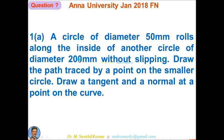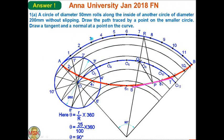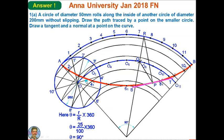Draw arc AB with radius equal to 100 mm. Before finding the angle, the arc length of AB must be equal to the circumference of the smaller circle. The diameter of the smaller circle is 50, so the circumference is π×50. The arc length AB must equal π×50. That is one approach to find the angle for arc AB.